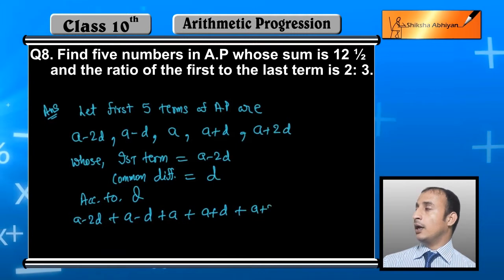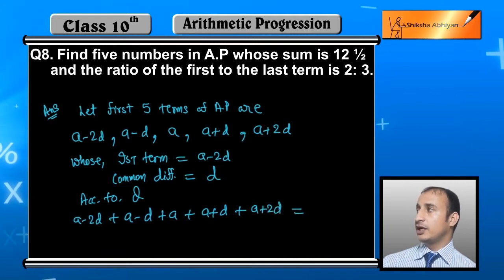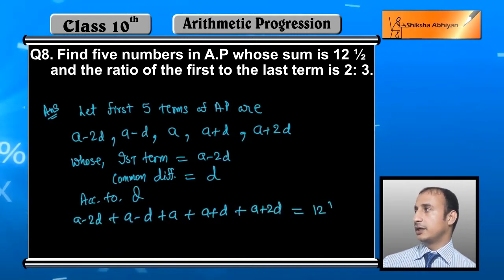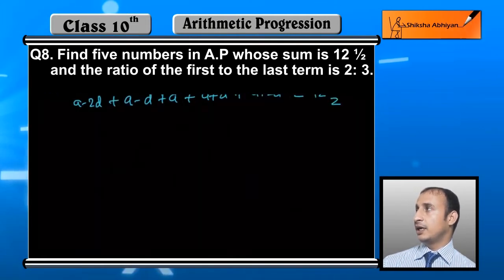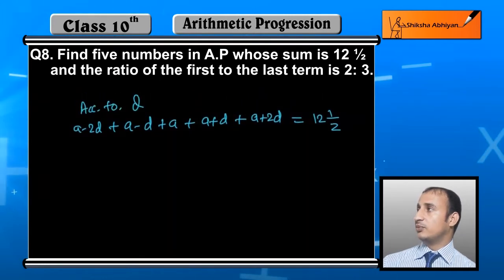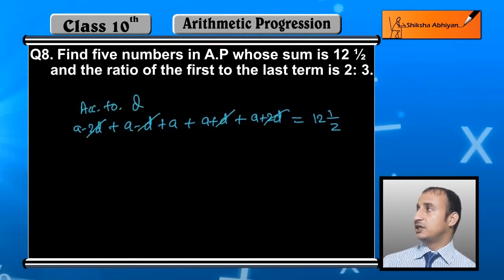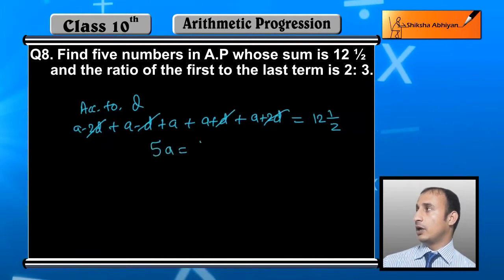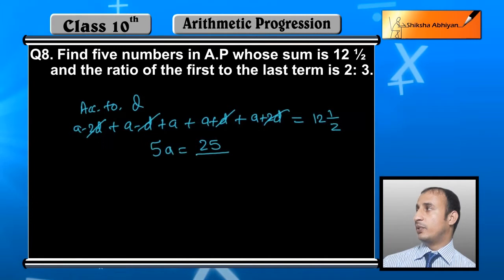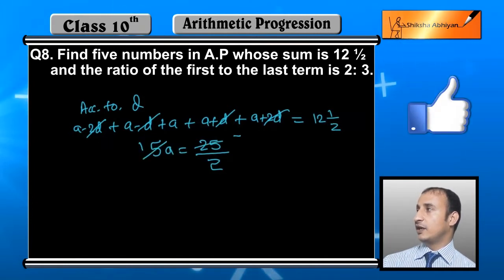Sum बराबर 12 and a half है। जब हम सब terms add करते हैं तो d के terms cancel out हो जाते हैं और हमें a की value मिल जाती है। यह 5a equal to 12 and a half, यानि 25 by 2 होता है। 5 से cancel करने पर a की value 5 upon 2 आ गई।